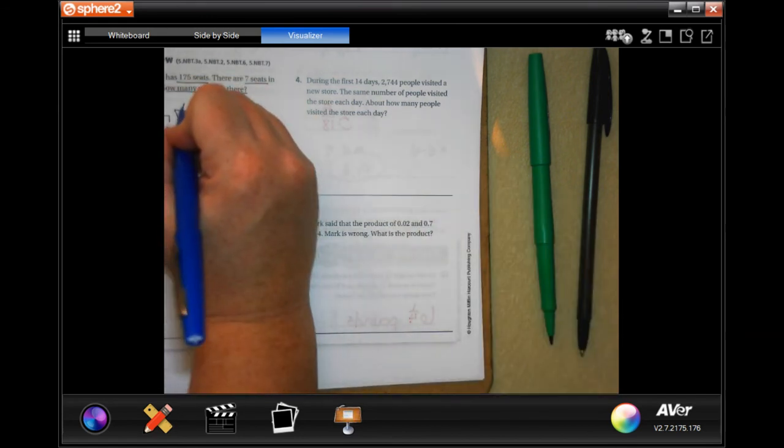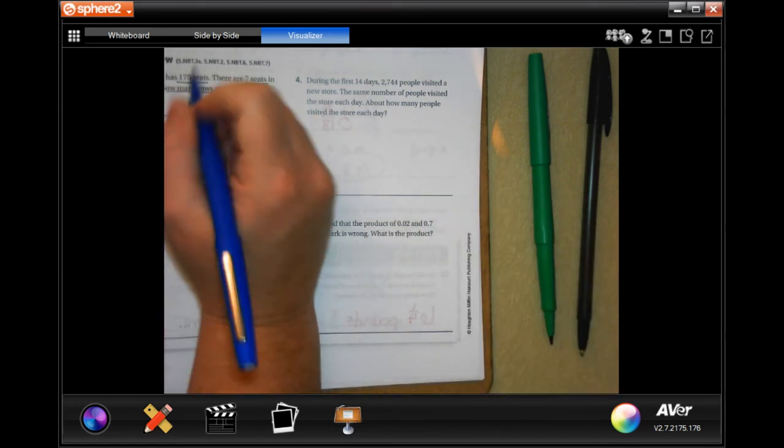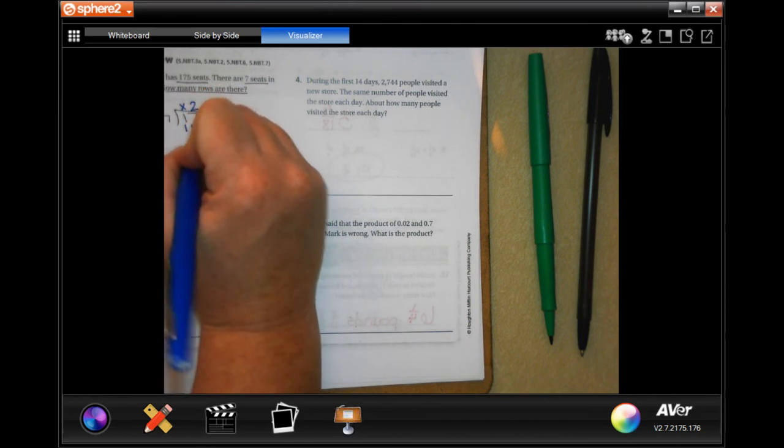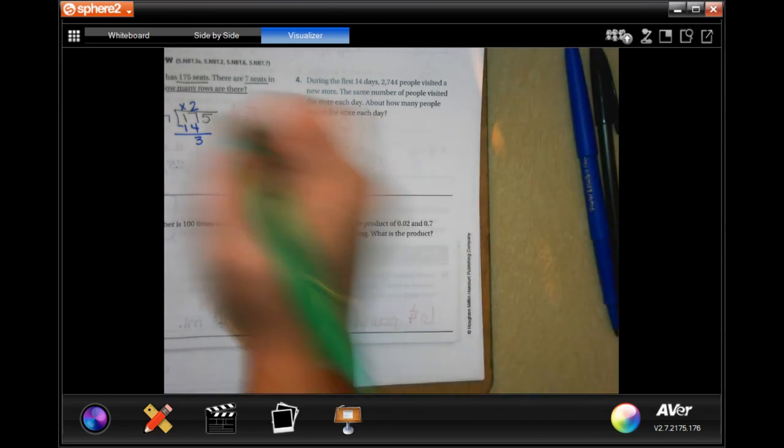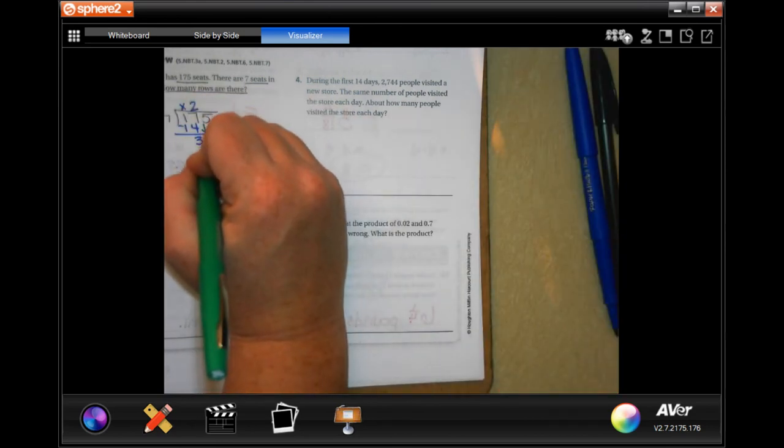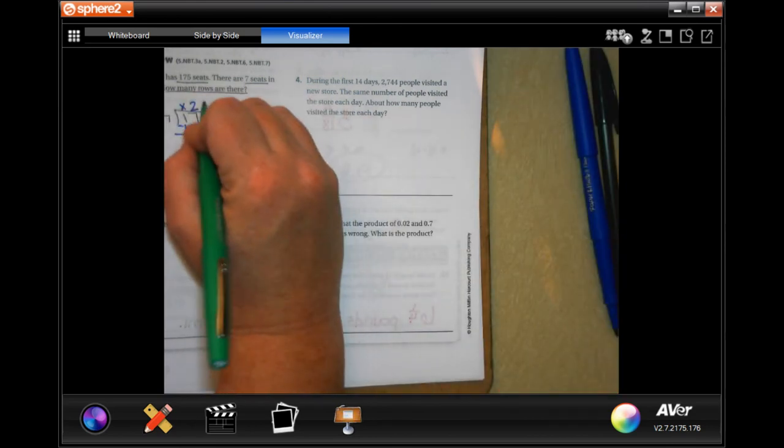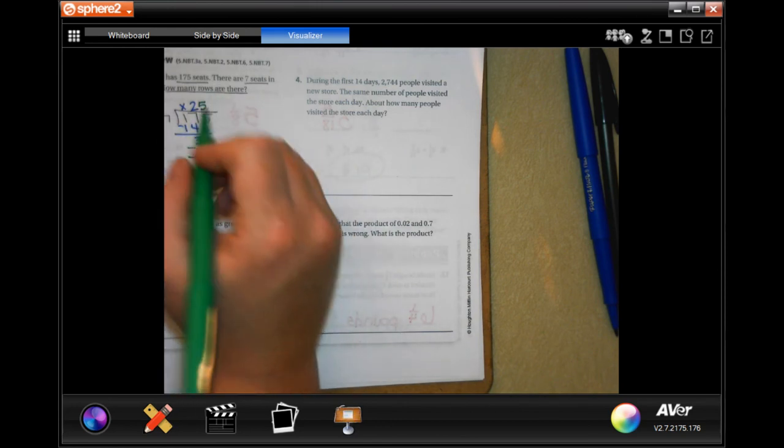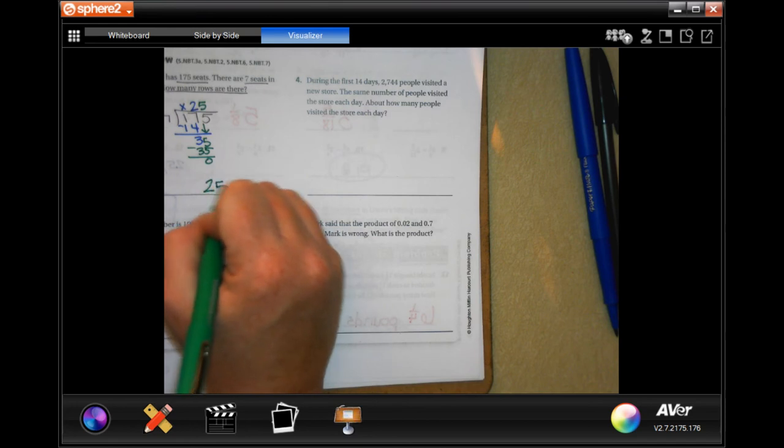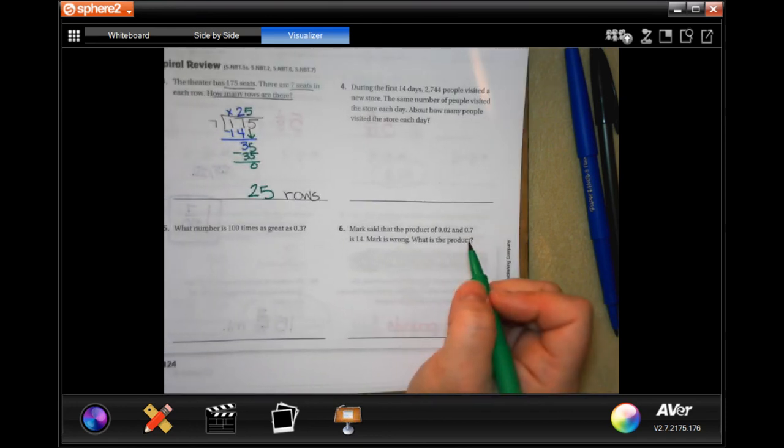7 is not going to go into 1. 7 goes into 17, 2 times, which is 14, subtract, get 3. 3 is definitely smaller than 7, so I'm going to bring down my 5. And 7 goes into 35, 5 times. 5 times 7 is 35. Subtract and get 0. So 25 rows.